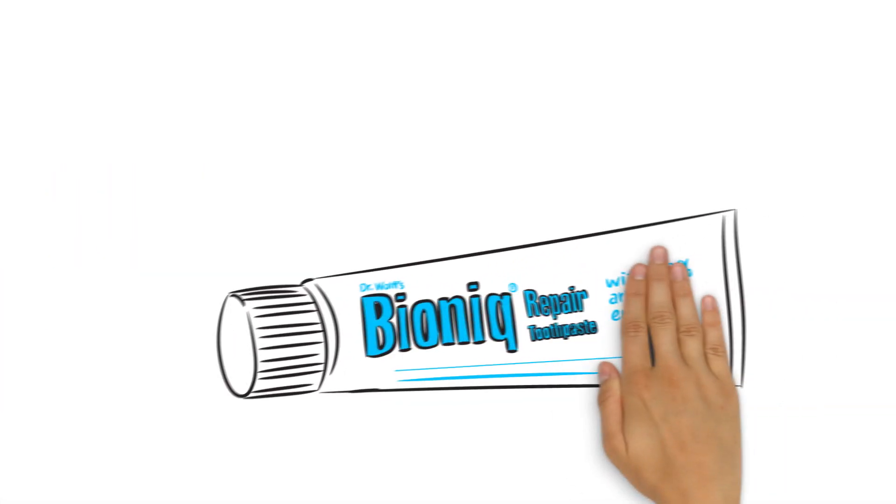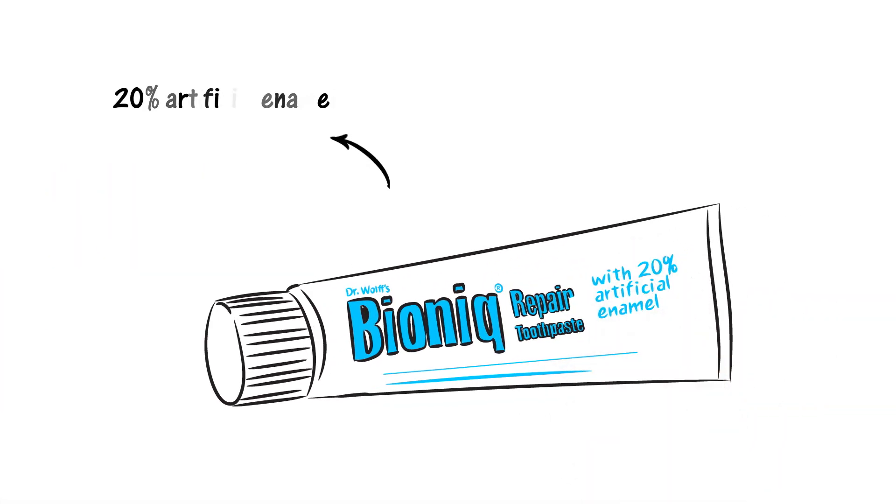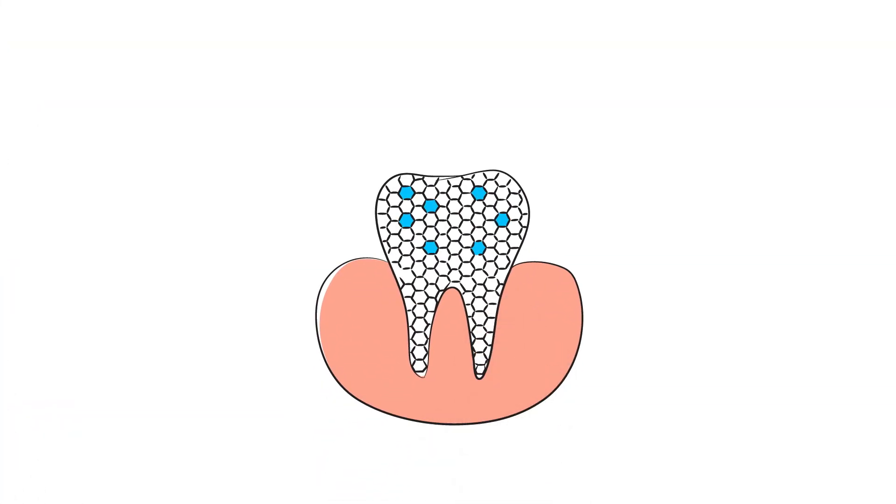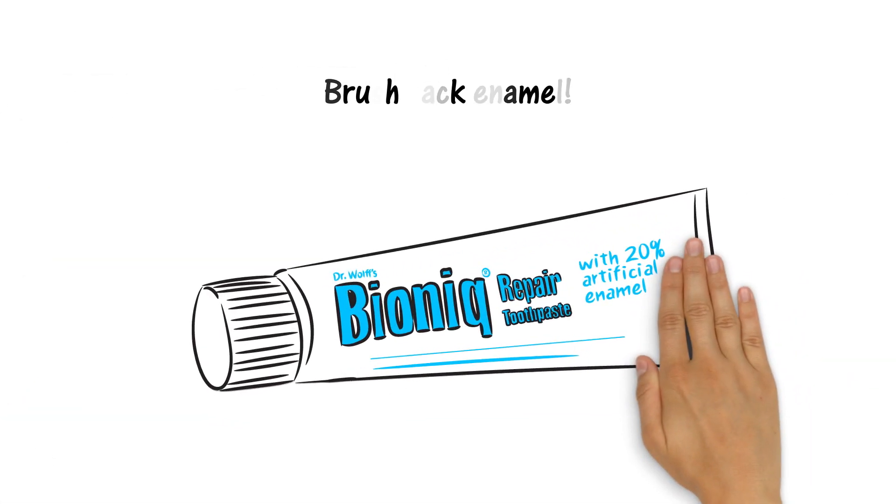Conclusion. Bionic Repair Toothpaste with 20% artificial enamel should be used twice a day. Defects are repaired, the enamel surface becomes smoother, a protective layer is formed on the teeth, and sensitive teeth are prevented. From now on, brush back enamel.